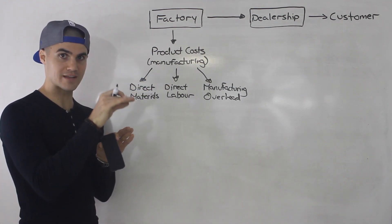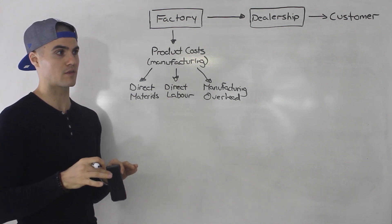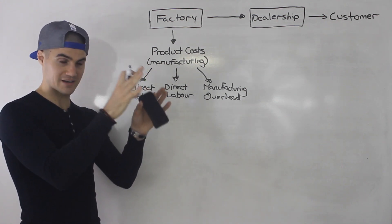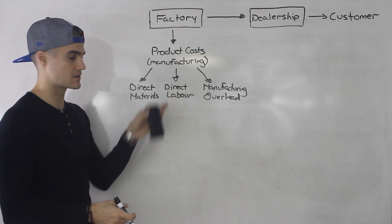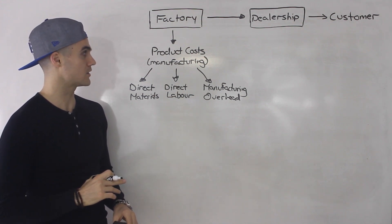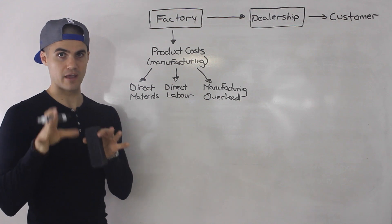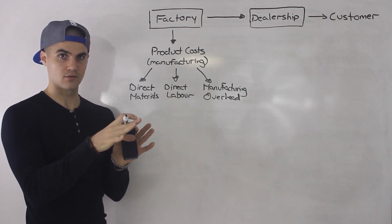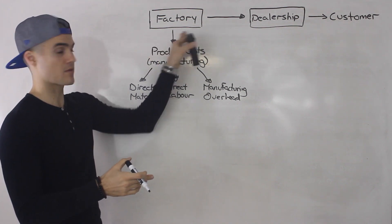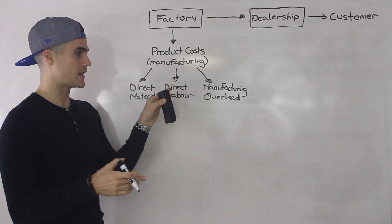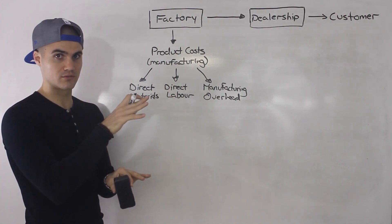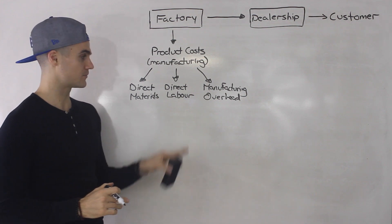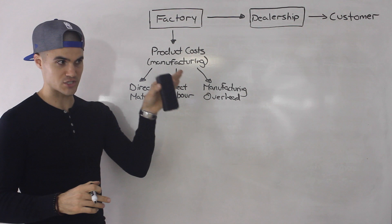Same thing with direct labor — it's labor that's directly traced to the product. If there is someone painting all the cars, you could see how their labor directly affects the product. It's a direct cost. Versus, let's say, a custodian in the factory — that's still labor you have to pay for, but you can't see how a custodian's labor directly affects the car. They're responsible for maintenance of the whole factory, not a specific car. So that would be indirect labor, which goes under manufacturing overhead. Direct labor is any labor traceable to the product.